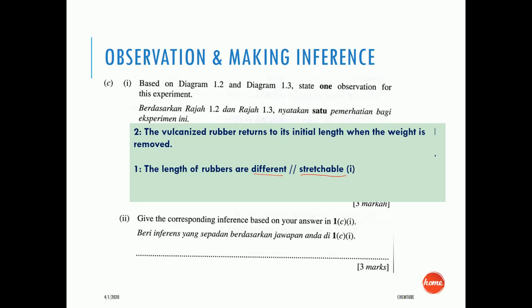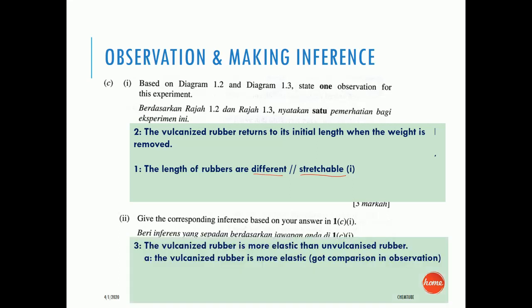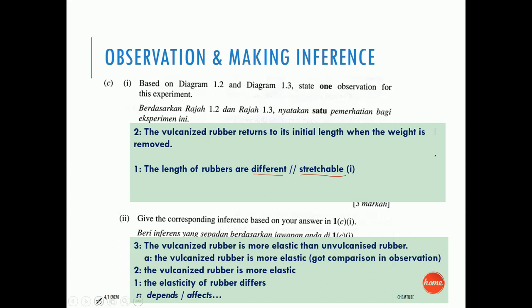After the observation, the inference must be: the vulcanized rubber is more elastic than unvulcanized rubber. This gets score 3. We also accept 'the vulcanized rubber is more elastic' if a comparison was already made in the observation — this gets score 2. Score 1 would be 'elasticity of the rubber differs.' We reject answers like 'depends' or 'effects.'